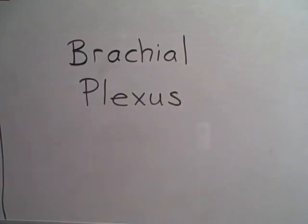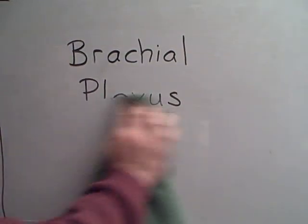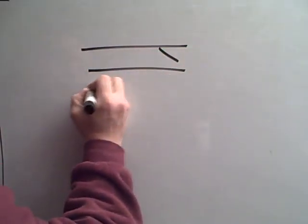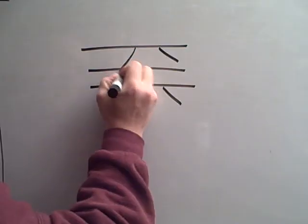You can actually draw the brachial plexus rather quickly, often in as little as 10 or 15 seconds, especially when you're doing it on a piece of paper. Just to give you an idea how quickly you can draw it, here's how I like to draw it, and then I'll go over it a bit.